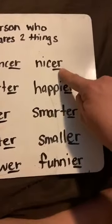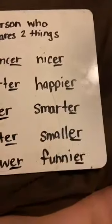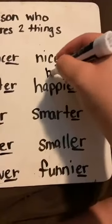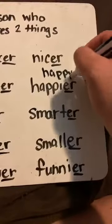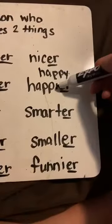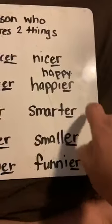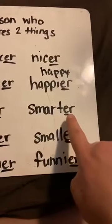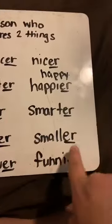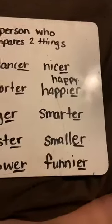Here we go: nicer. Ooh, look at this one — what did I have to do? How do I spell 'happy'? I spell happy H-A-P-P-Y. What did I have to do? I had to change that Y to an I and add '-er.' Very good. Happier, smarter, smaller, funnier. Very good!